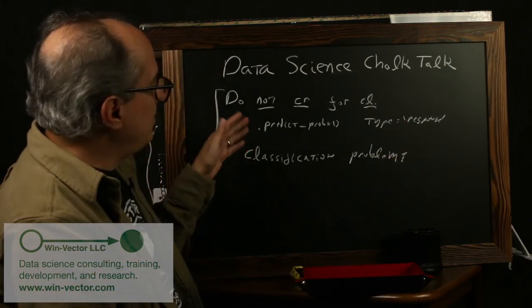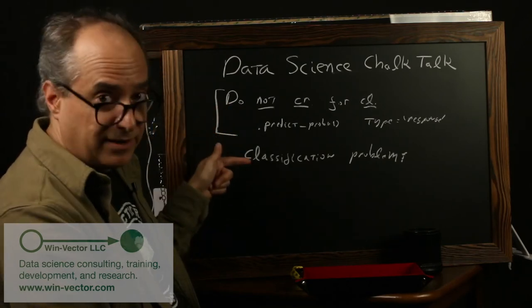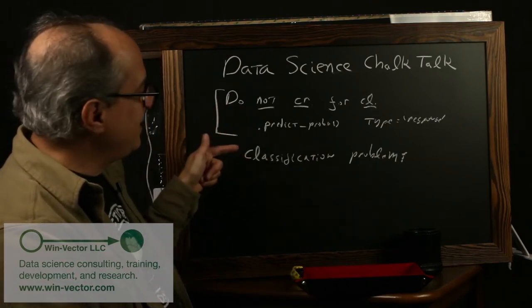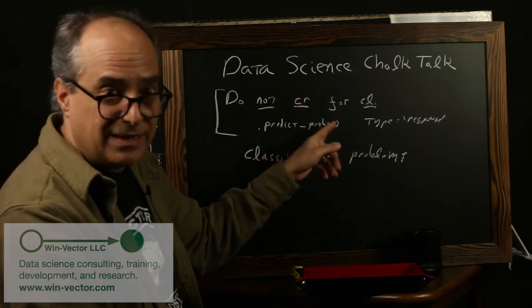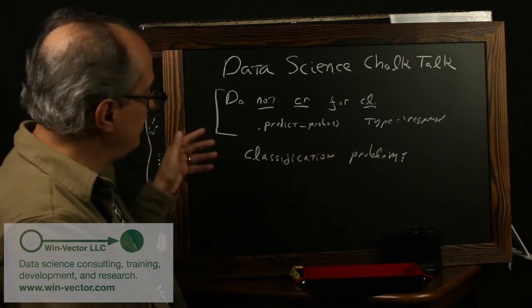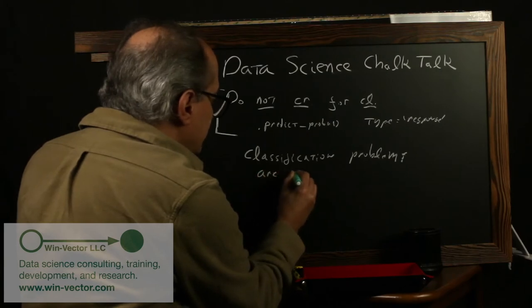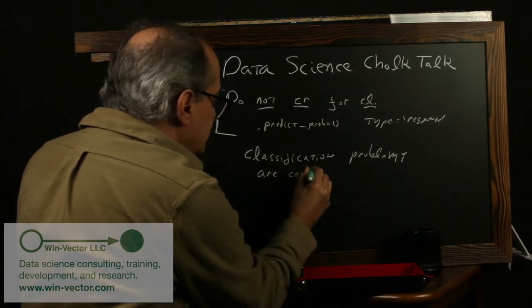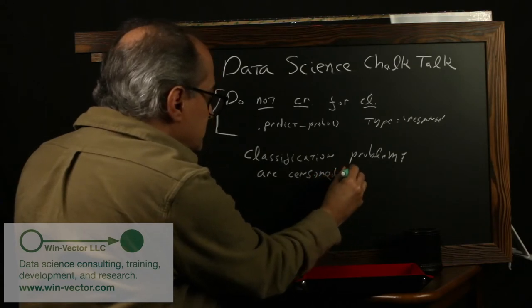What if, in addition to being what you want to predict should be a probability, what if you wish your training data were also probabilities? That the training data didn't just give you what class something is, but what probability it would have hit that class under repeated experiments. So classification problems, my advanced idea, are censored training data.